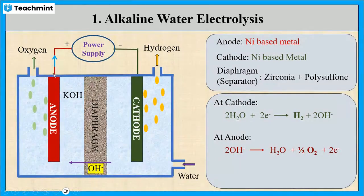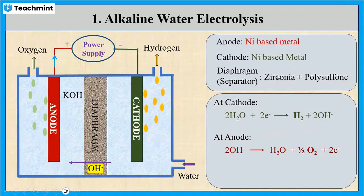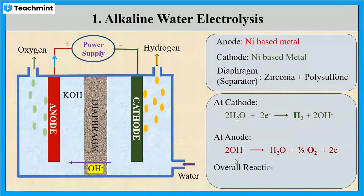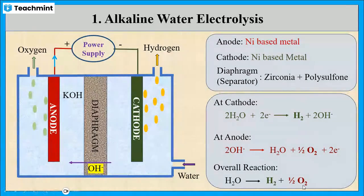These electrons move in the external circuit. This is the anode reaction. The overall reaction will be water is converted into hydrogen gas and oxygen gas.